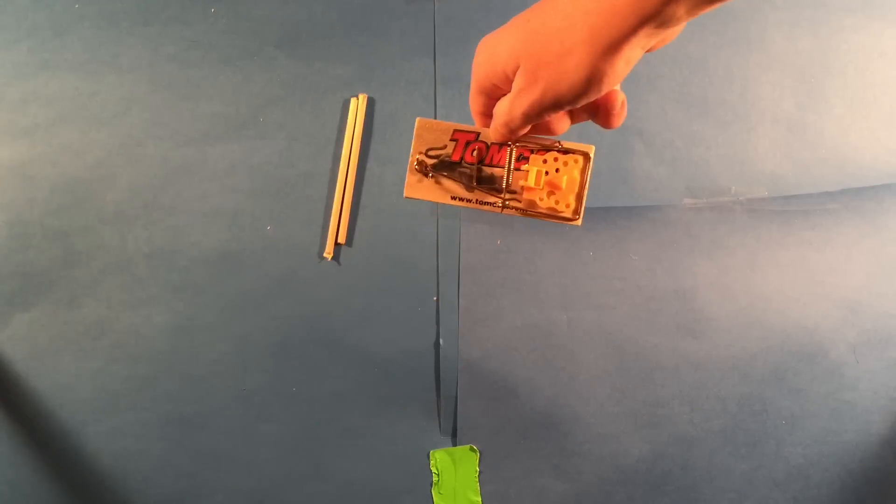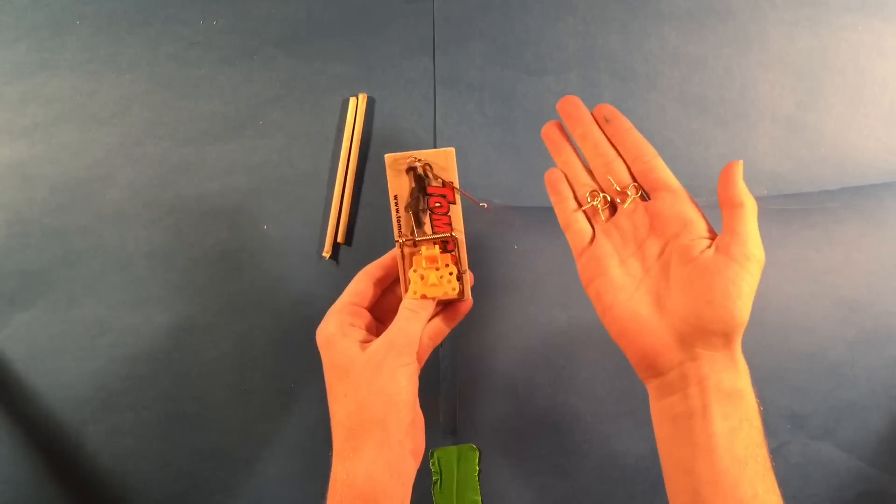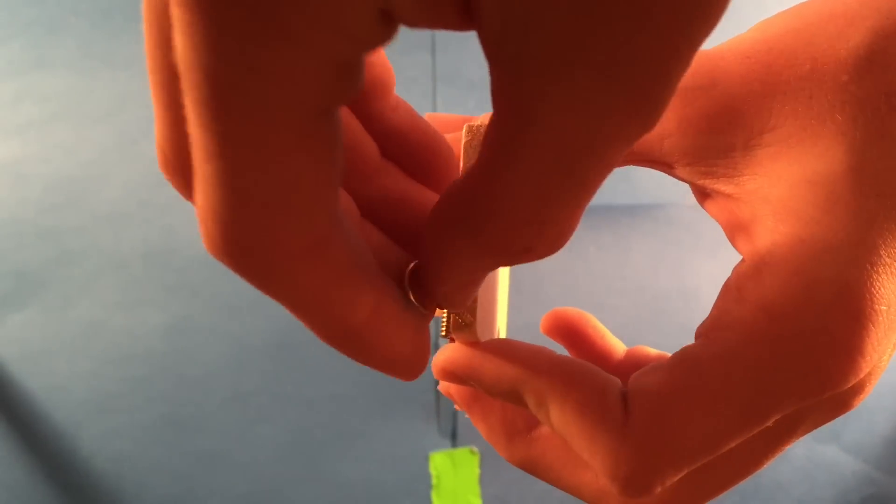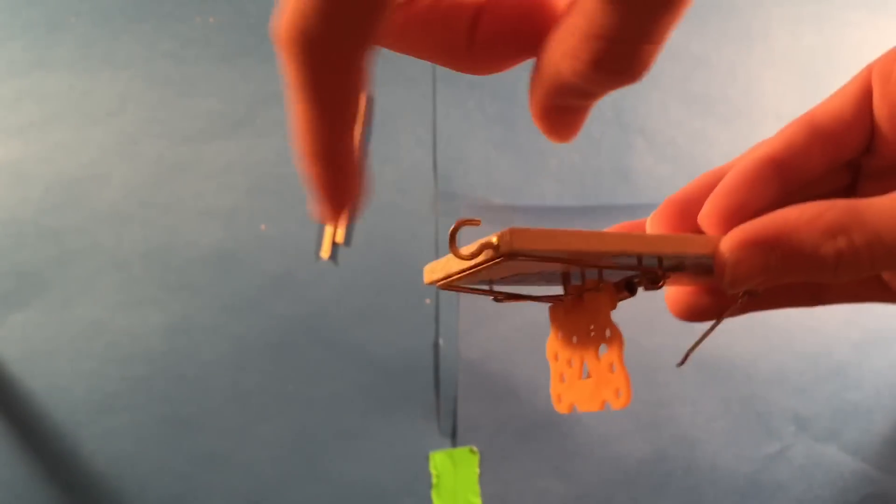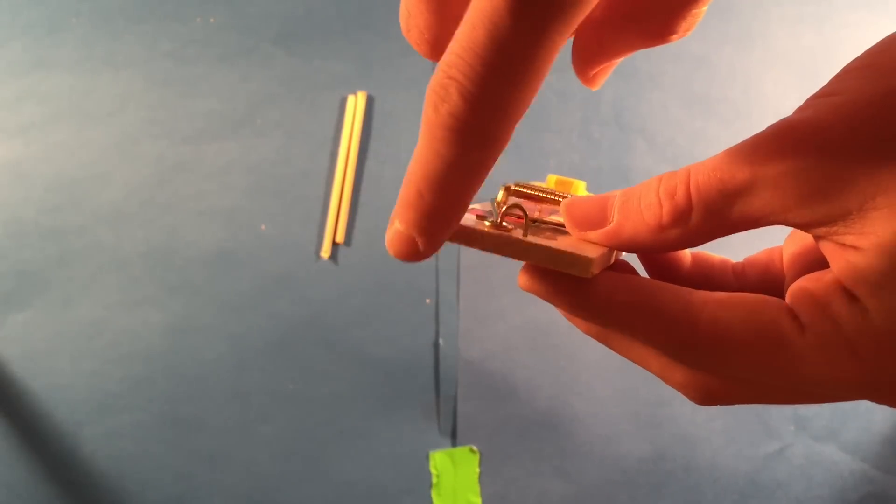Next, you will need a mousetrap. You will take the hook screws and screw them in. Then you will put your axle through the two screws on each side of the mousetrap.